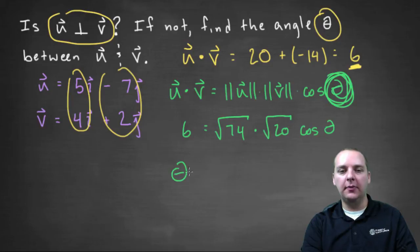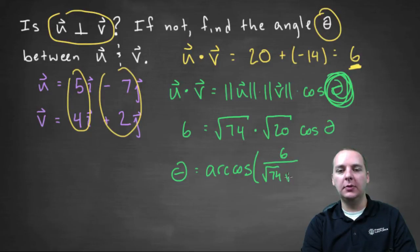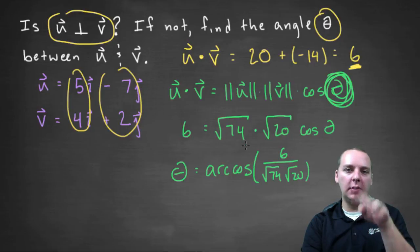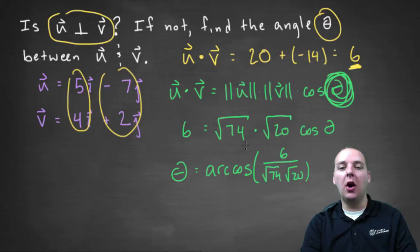So theta should be whatever the arc cosine of six divided by these two quantities, the square root of seventy-four times the square root of twenty. So once you divide those two terms over under the six, then you would take the arc cosine of that. I'm going through the algebra a little bit quickly here, but basically you're just trying to solve for theta, and whatever this quantity is, that would be your answer.